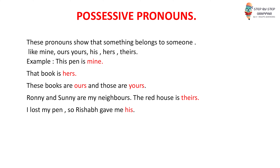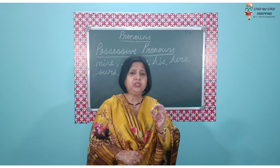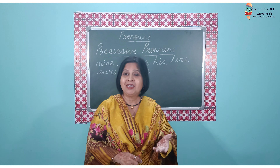Instead of using the name, you simply say that book is hers. These books are ours and those are yours — now it's plural. Ronnie and Sunny are my neighbors. The red house is theirs. They own that house — possession means owning something, something belongs to you. I lost my pen, so Rishabh gave me his. Instead of saying 'Rishabh gave me his pen', we just make it short by saying 'Rishabh gave me his'.